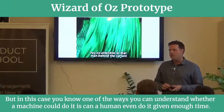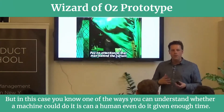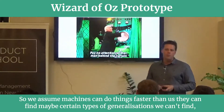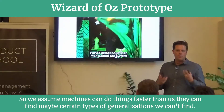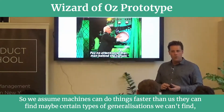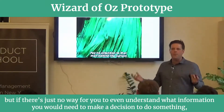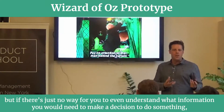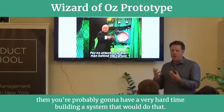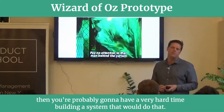one of the ways that you can understand whether a machine could do it is: can a human even do it given enough time? So we assume machines can do things faster than us. They can find maybe certain types of generalizations we can't find. But if there's just no way for you to even understand what information you would need to make a decision to do something, then you're probably going to have a very hard time building a system that would do that.